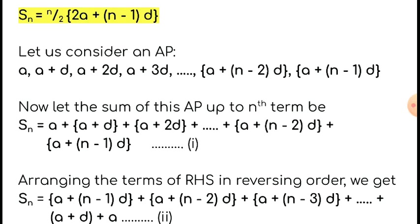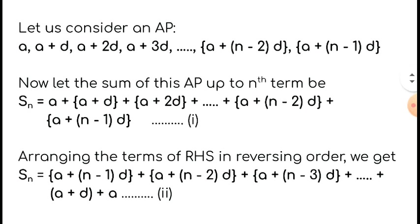For our convenience, let us arrange the right-hand side of the equation in reverse order. If you arrange the terms in reverse order, the summation remains the same. So S_n equals (a plus (n minus 1)d) plus (a plus (n minus 2)d) plus ... plus (a plus d) plus a. Call this equation number 2.